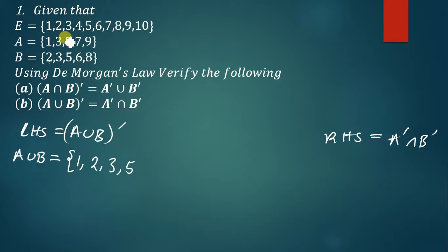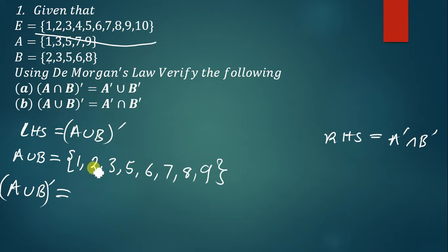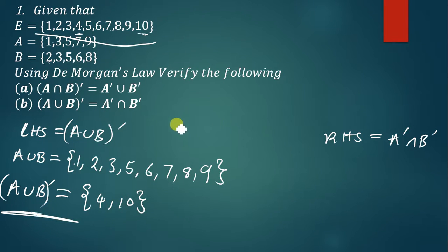So A∪B = {1, 2, 3, 5, 6, 7, 8, 9}. To find (A∪B)', we write the elements present in the universal set but not in A∪B. Going through: 4 is not in A∪B so we write 4, and 10 is not in A∪B so we write 10. Therefore (A∪B)' = {4, 10}.